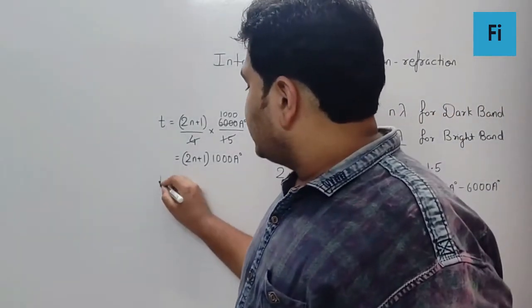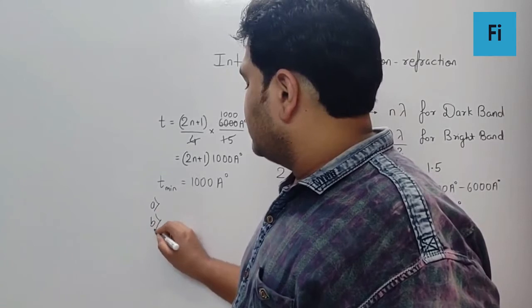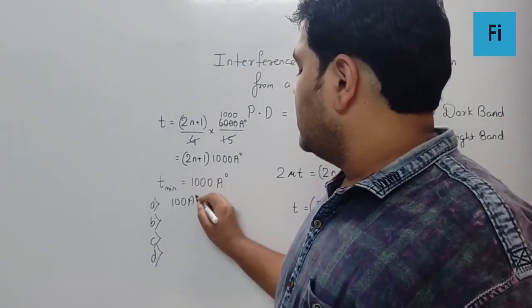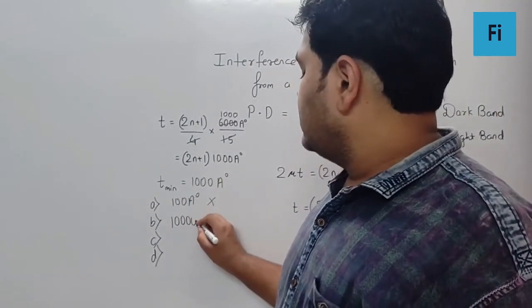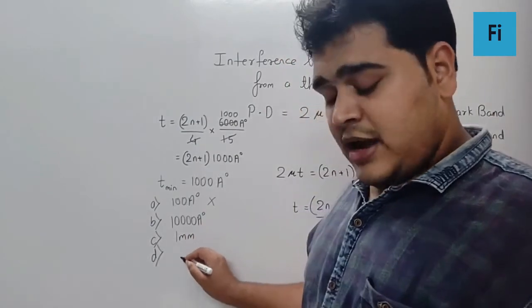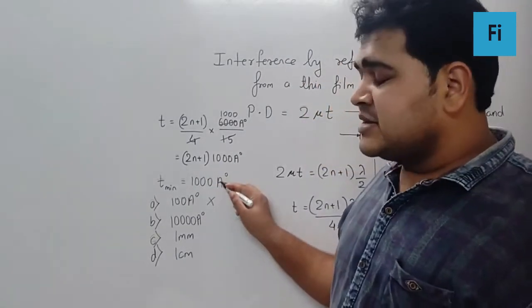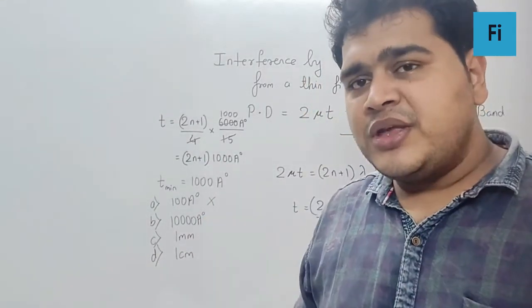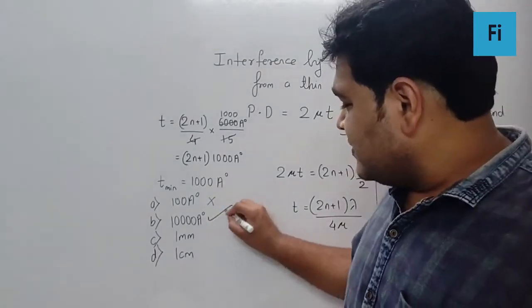Now the options given in the question are 100 Å which is not possible because the minimum is 1000 so this is out, 10,000 Å definitely possible because it is greater than 1000, then we have 1 mm and we have 1 cm. Now don't you think out of all the given options only 100 is less than 1000 so that is not possible but remaining all the three are greater than 10,000 so they are quite possible. But don't you think they have themselves as the minimum thickness?